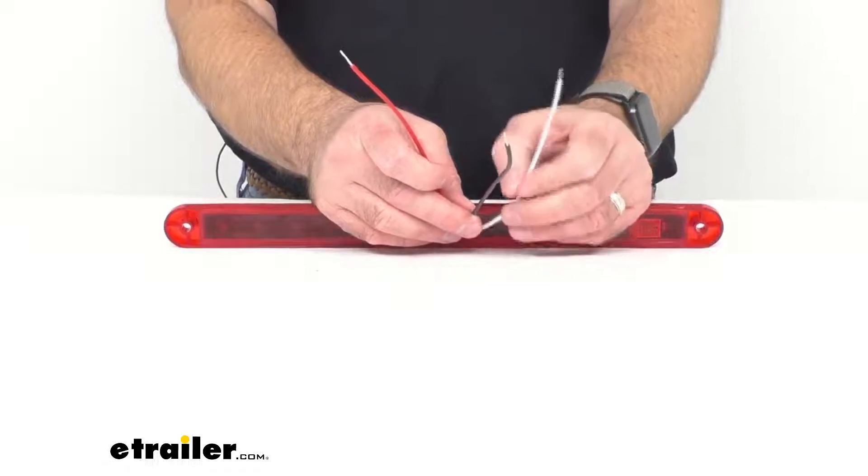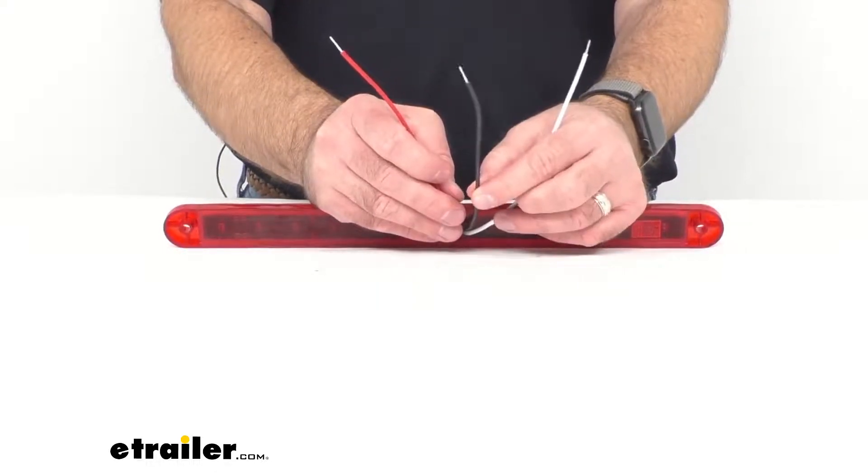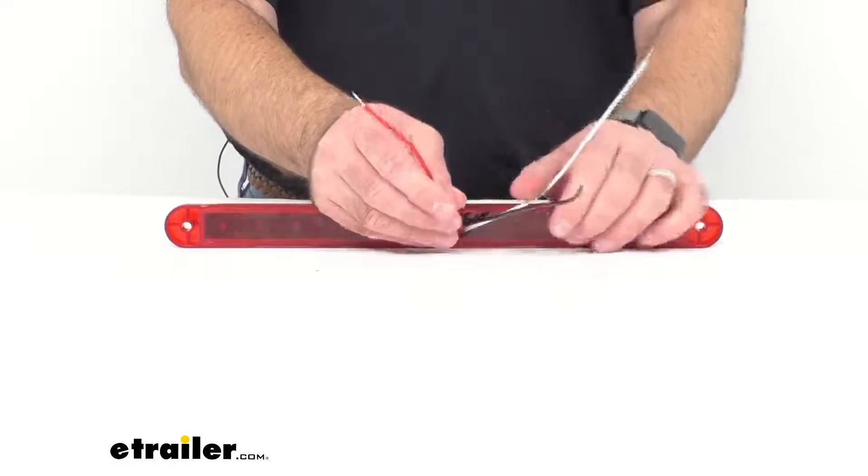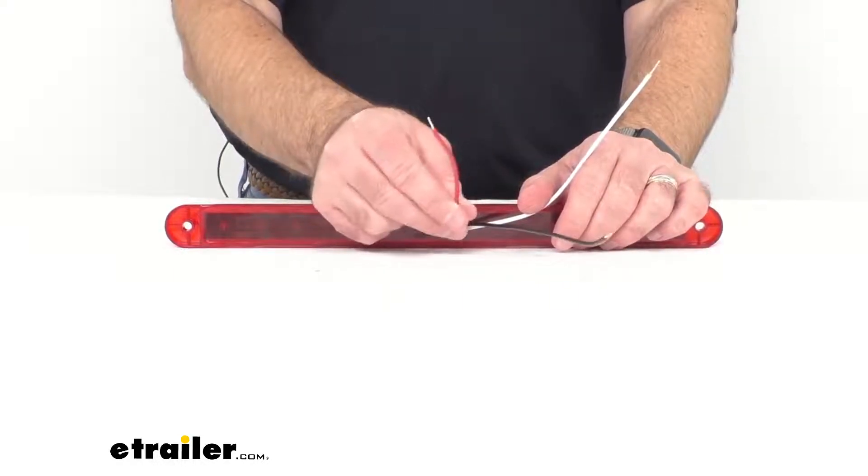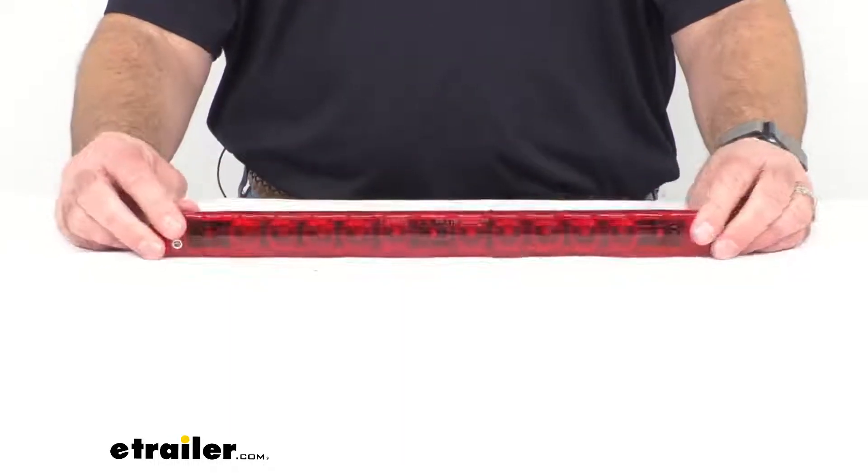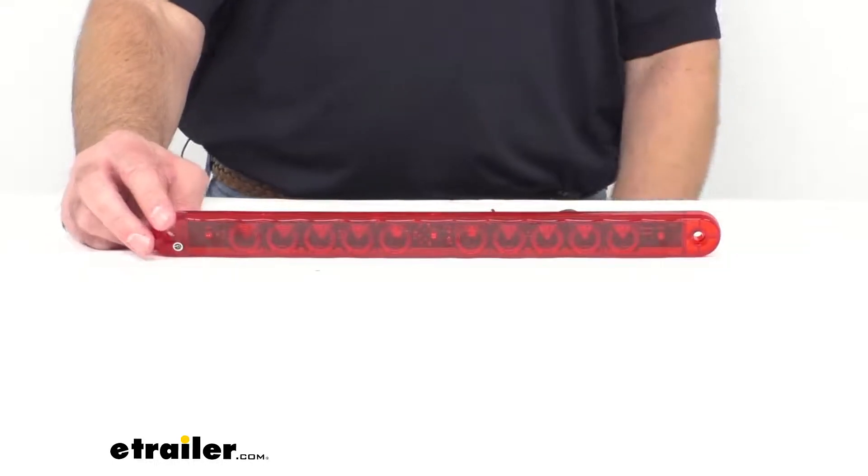The white wire is going to be ground, the black wire is going to be power, and the red is going to be your stop and turn in the case of this light. Now let me go ahead and give you some measurements here.